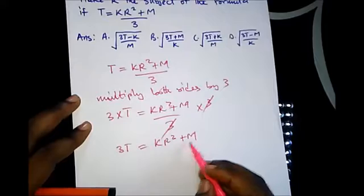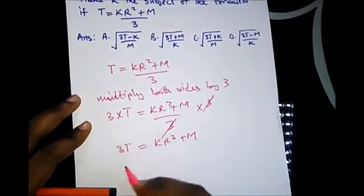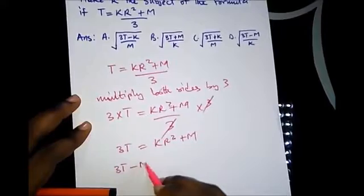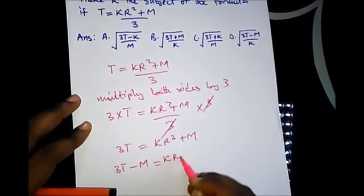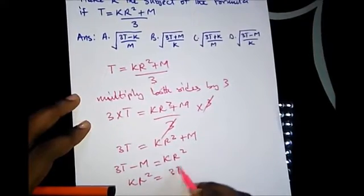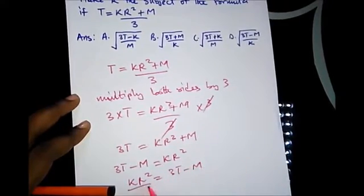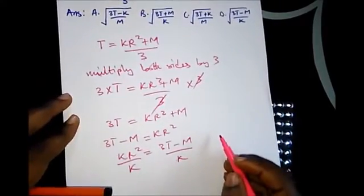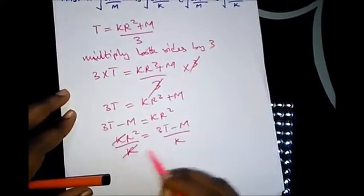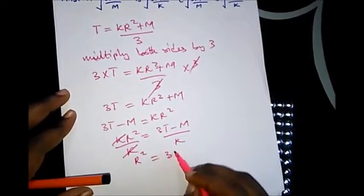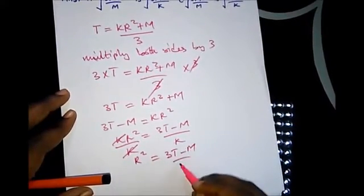Let's take m to the other side: 3t - m = kr². So kr² = 3t - m. Now divide both sides by k to leave r² alone on the left-hand side. This gives us r² = (3t - m) / k.